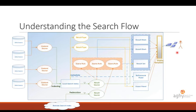Even if you touch only one part of this structure — for example, change a query rule — you can make a very significant change to the user experience immediately. You have to really understand the relationships between all these things, and I think this is the biggest challenge when implementing search.